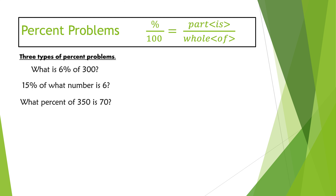Percent problems is what we're going to go over next. Remember the proportion we always start with is percent over 100 equals part over whole. A lot of people say 'is over of' because the word 'is' generally indicates the part and 'of' indicates the whole. This is proportional reasoning — like dollars to hours, or gallons to miles. Percent means out of a hundred, so percent is the part out of a hundred, a hundred being the whole.